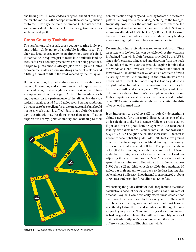Determining winds aloft while en route can be difficult; often an estimate is the best achievable. A first estimate comes from winds aloft forecasts provided by the AFSS. Once aloft, estimate wind speed and direction from the track of cumulus shadows over the ground, keeping in mind that winds at cloud level often differ from those at lower levels. On cloudless days, obtain an estimate by noting drift while thermaling. When flying with GPS, determine wind speed from TAS by simple subtraction; some flight computers automatically calculate winds aloft.